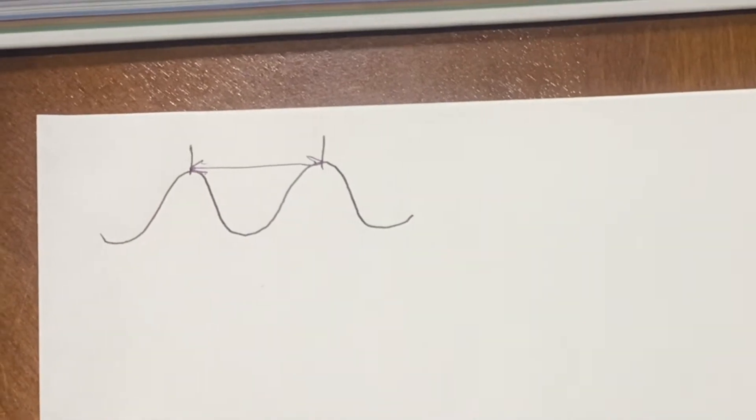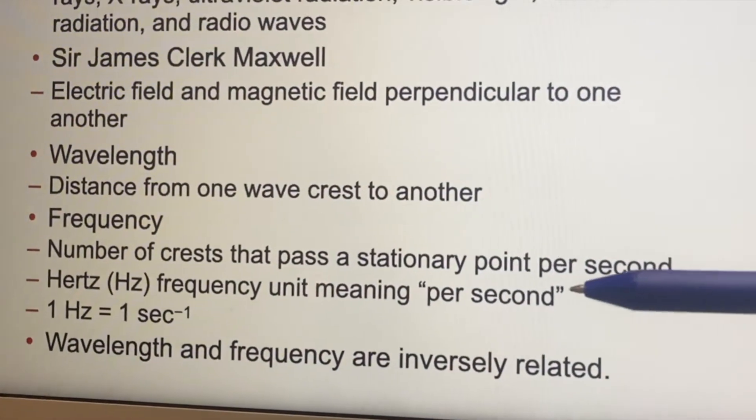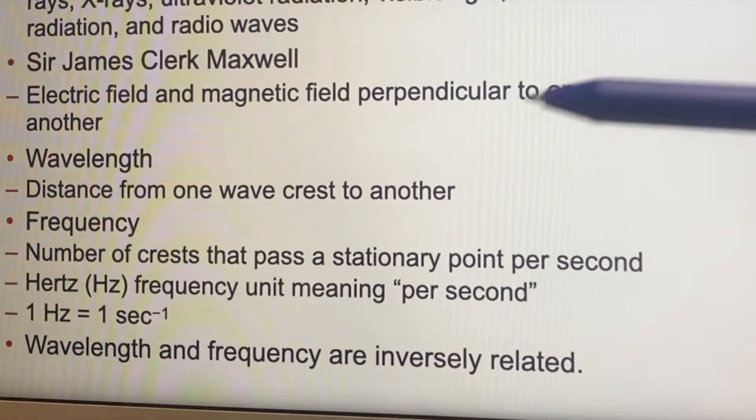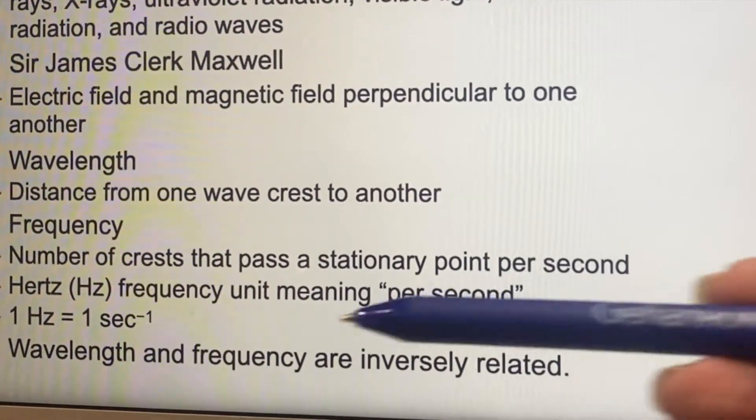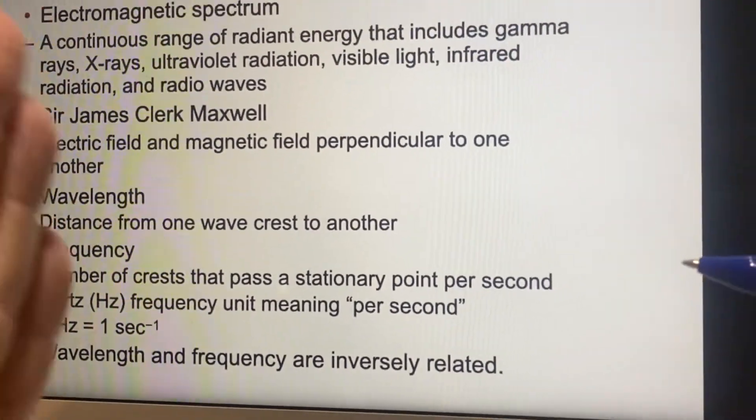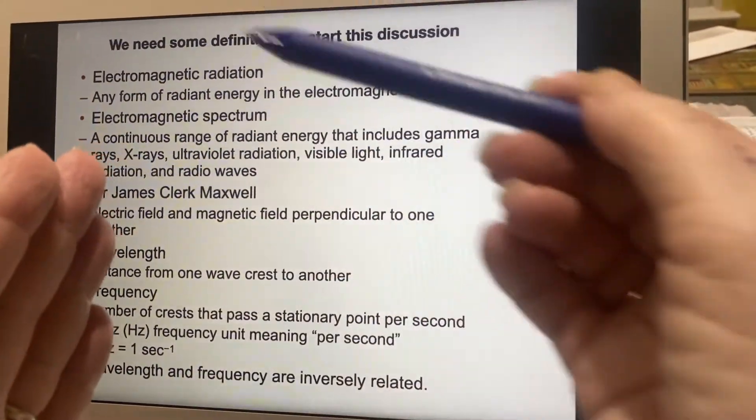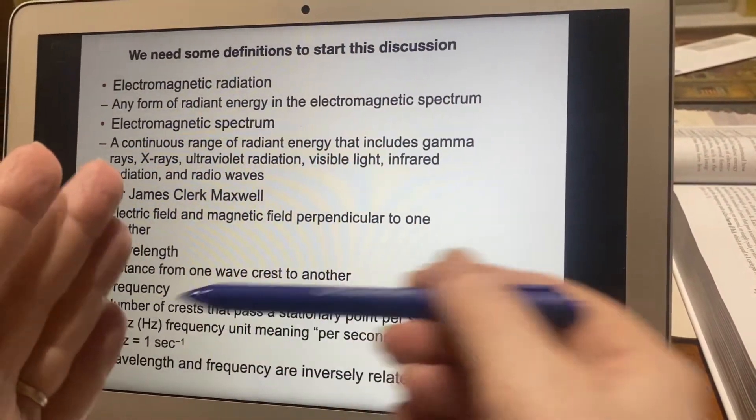Then there's frequency. The frequency is the number of crests that pass a stationary point per second because this thing's moving. The wave itself is moving through space.